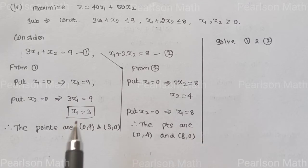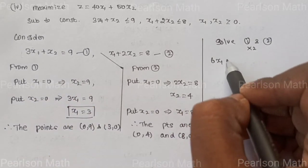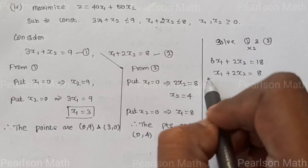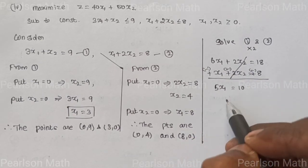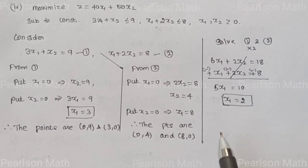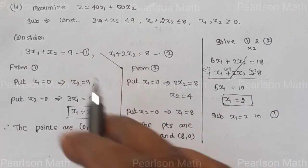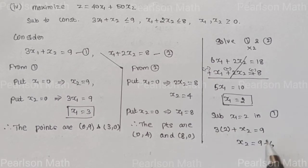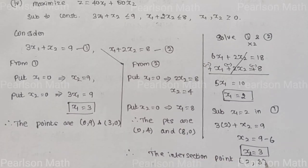Now solve equations 1 and 2 simultaneously. Multiply the first equation by 2: 6x1 plus 2x2 equal to 18. Second equation: x1 plus 2x2 equal to 8. Sign change to eliminate 2x2 — 6 minus 1 is 5, 18 minus 8 is 10, so x1 equal to 2. Substitute x1 equal to 2 in the first equation: 3(2) plus x2 equal to 9, so 6 plus x2 equal to 9, x2 equal to 3. Therefore, the intersection point is (2, 3).